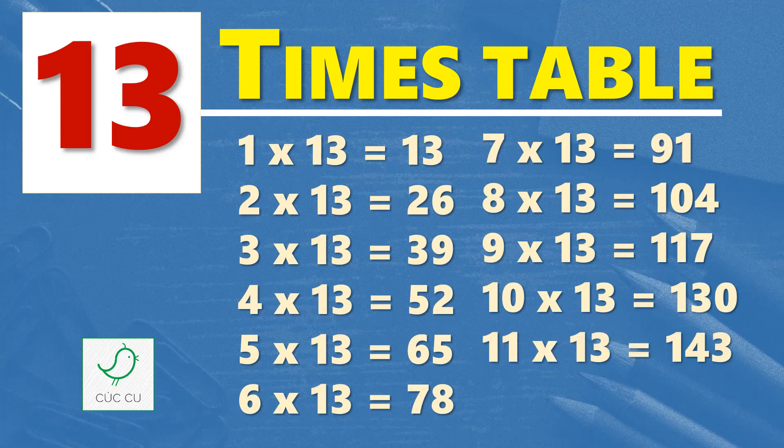Eleven times thirteen are one hundred and forty-three, twelve times thirteen are one hundred and fifty-six.